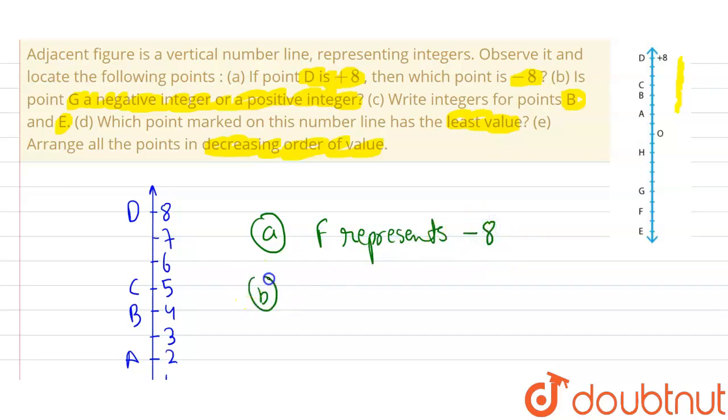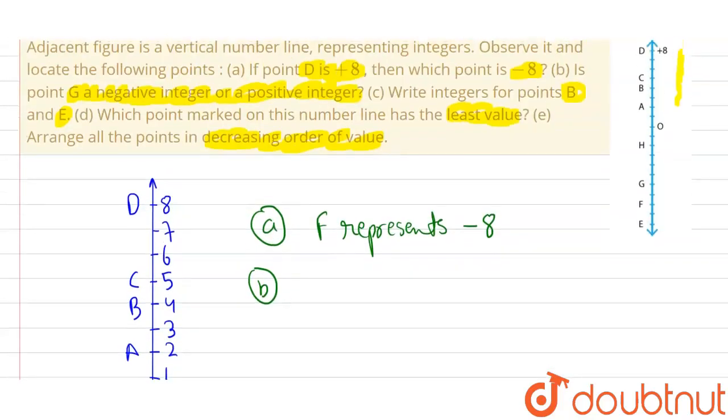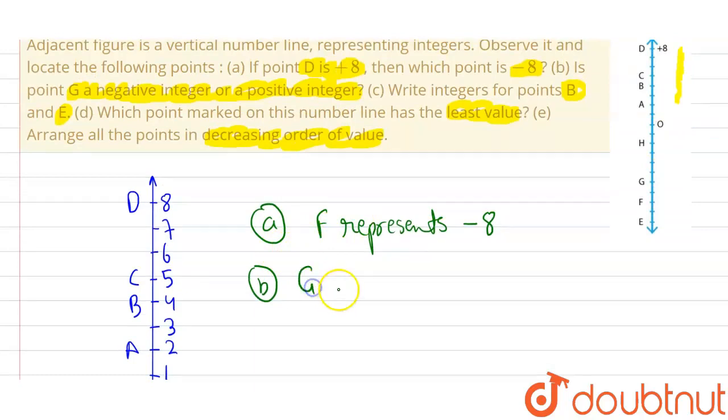Now, let's see the B part, which is: is point G a negative integer or a positive integer? Let's see G. Now, we can see that G represents -6. Therefore, G is a negative integer.